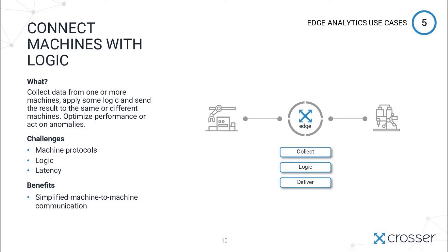The second reason is anomaly detection, where you analyze data from a machine and generate a local trigger that could inform someone that they need to do something, or even take a direct action in another machine, like stopping it. This is a pure on-premise use case where you connect two different machines, and latency is typically critical — you have to do this locally to reduce it.